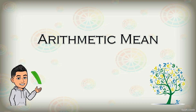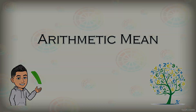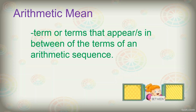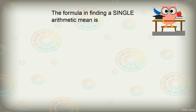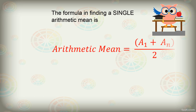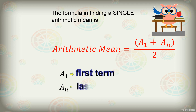Today we will be talking about arithmetic mean. Arithmetic mean is a term or terms that appears in between the terms of an arithmetic sequence. Whenever we are asked to look for a single arithmetic mean, we use the formula: a sub 1 plus a sub n divided by 2, where a sub 1 means the first term and a sub n means the last term.